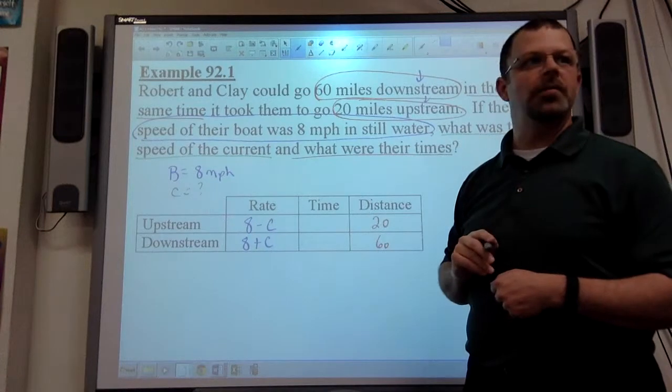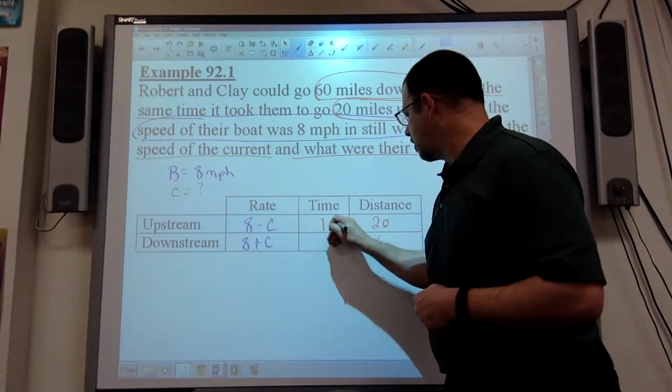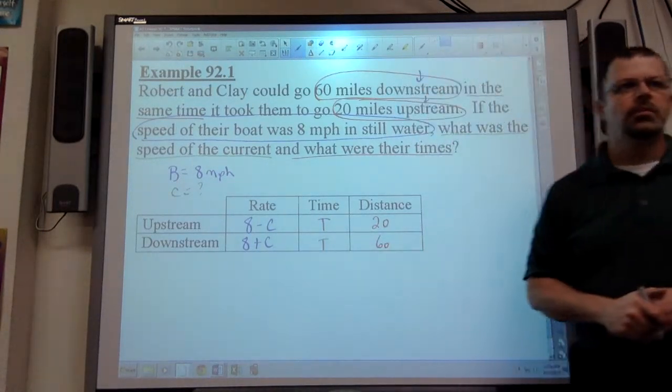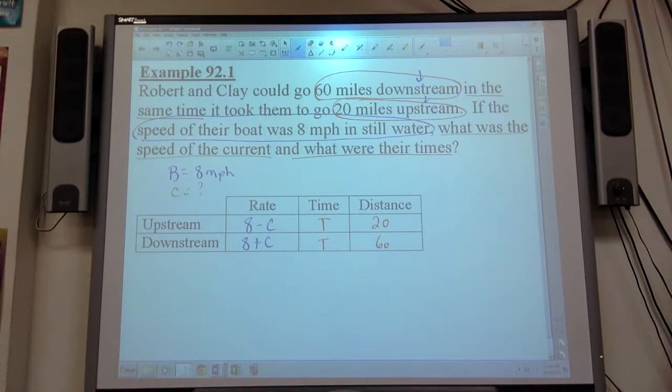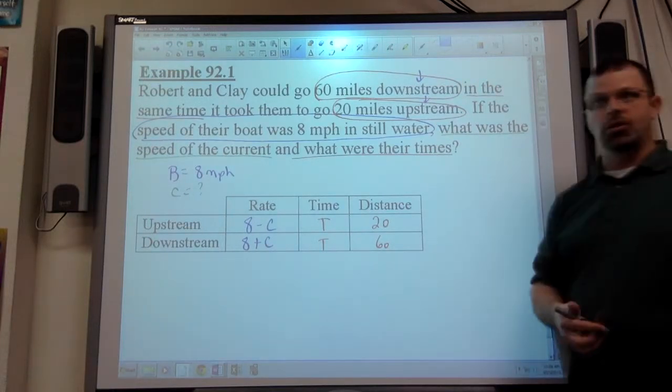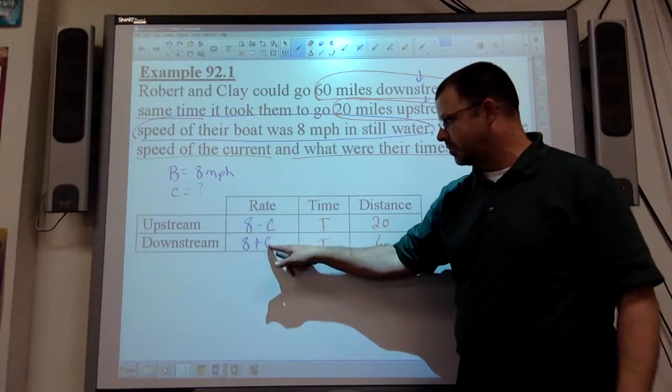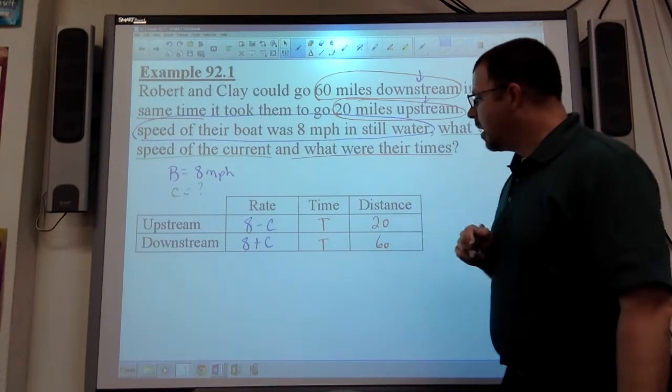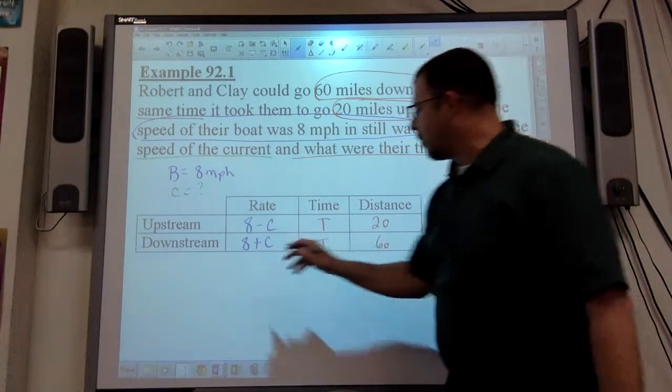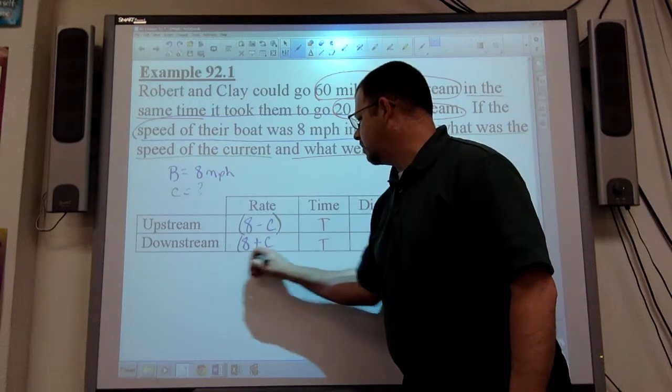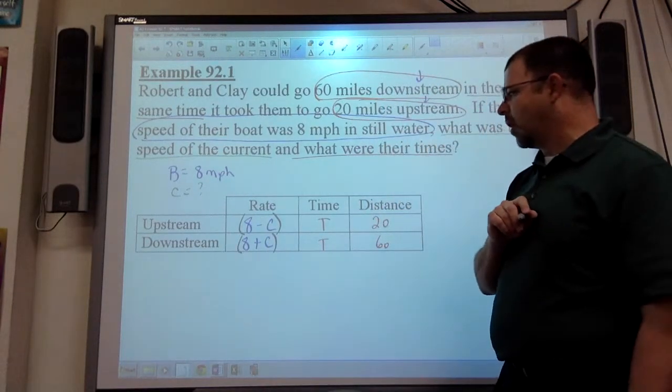It says in the same time. It doesn't tell me how much time though, right? So times are both T, unknown, but the same. And that's what I want to be able to do on these problems every time. Fill in the rates, fill in the times, fill in the distances. I get to use two variables at most, as you can see. Two variables being used here.